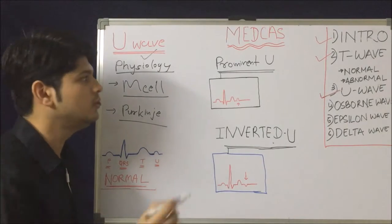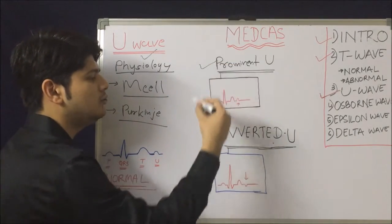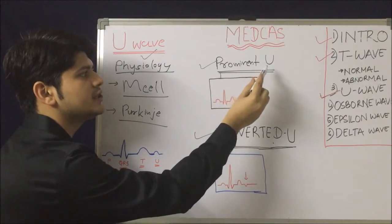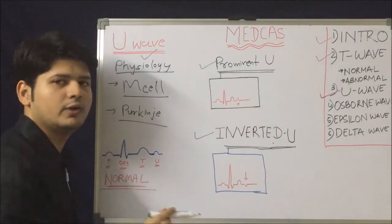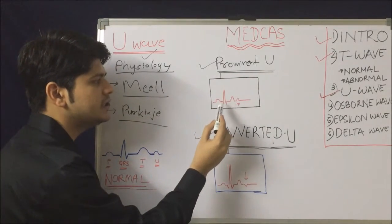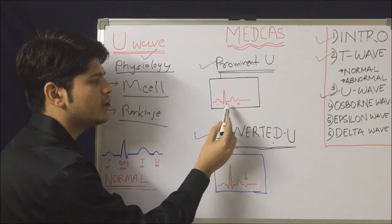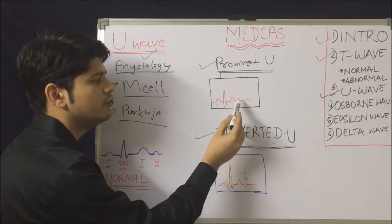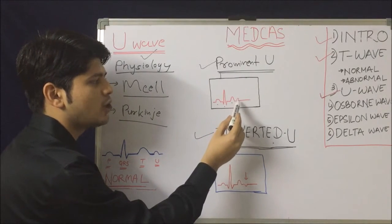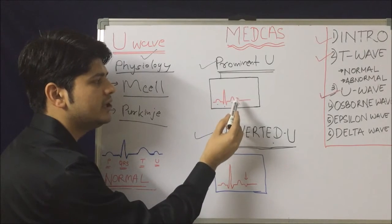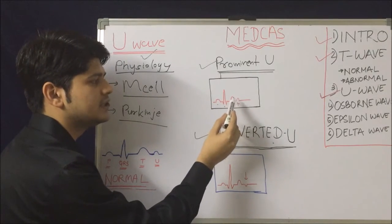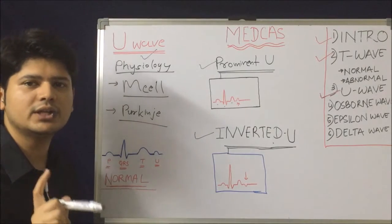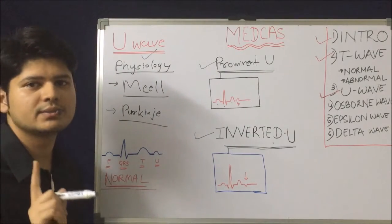Abnormality of the U wave can be either a prominent U wave or an inverted U wave. First, we understand what is a prominent U wave. Here you can see the P wave, then QRS, then T, and this is the prominent U wave. Prominent U wave amplitude will be more than 25% of the preceding T wave — that is the first criteria to call the U wave prominent.